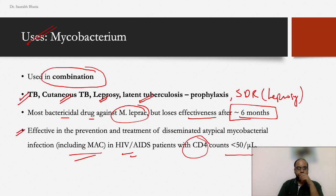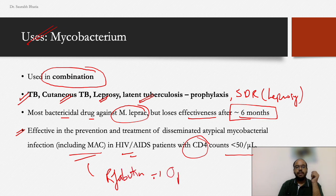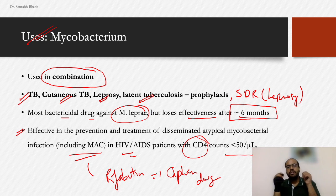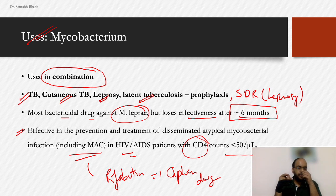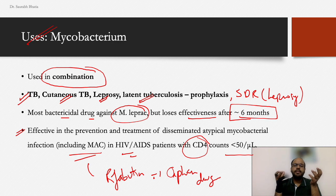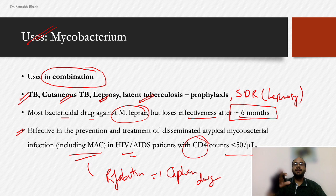For MAC and atypical mycobacterium indications, rifampicin has been given orphan drug status by the FDA. The concept of orphan drug applies to medications used for diseases so rare that companies might not manufacture them otherwise. When a drug receives orphan drug status, companies are required to manufacture a certain amount annually to maintain supply for that rare disease.